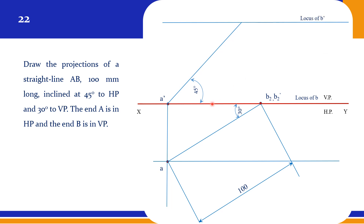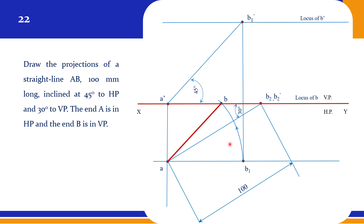At 45 degrees, you draw a line 100 mm long. So this is 100 mm long — this will become your B1 dash. The line A dash to B1 dash: you drop down up to the locus of A as usual practice. Then take A and B1 as radius, rotate up to the locus of B, and this is your final B point, which becomes your top view.